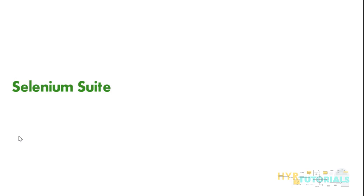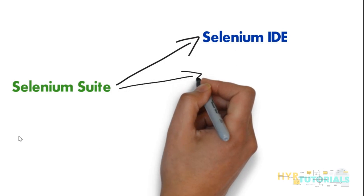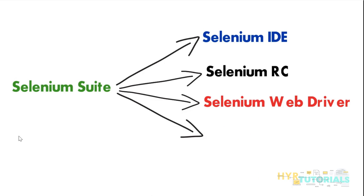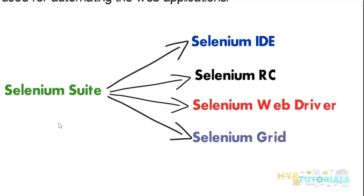Selenium is not a single tool — it consists of multiple components, all together called the Selenium Suite. Selenium has four components: first, Selenium IDE; then Selenium RC (Remote Control); then Selenium WebDriver, which is the most popular one nowadays; and finally Selenium Grid, which is also very popular. Each individual component in the Selenium Suite has a different purpose, designed to cater to different needs, so it's up to us to choose what we want to work with.